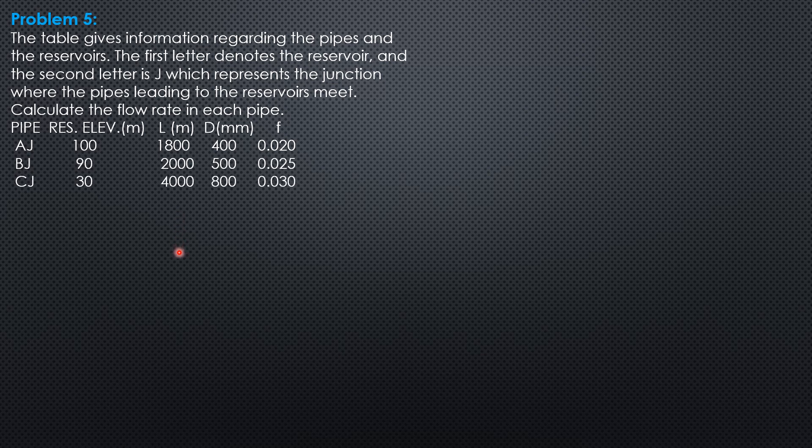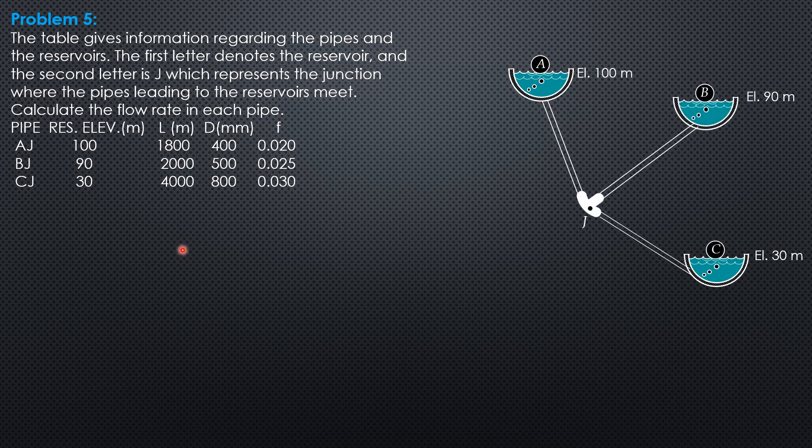So to help analyze the situation, let's load the figure first. We are sure that Reservoir A will supply and Reservoir C receives. So let's investigate first the position of the piezometric level by comparing, by assuming first that there's no flow in or out of B.